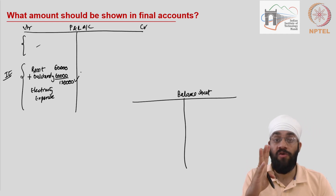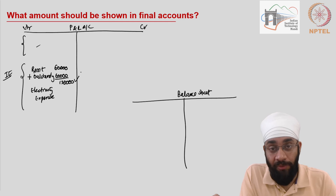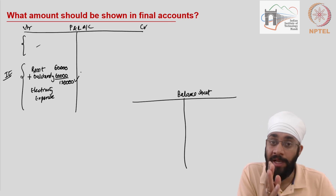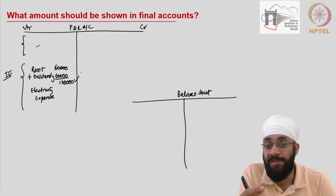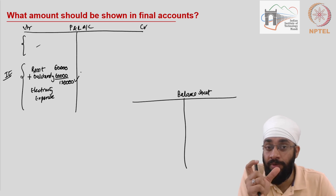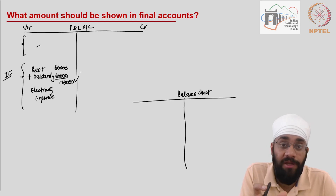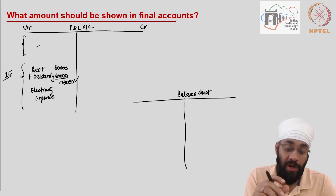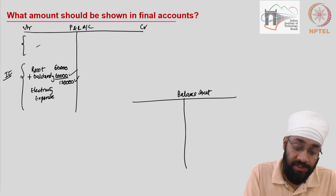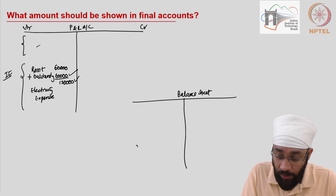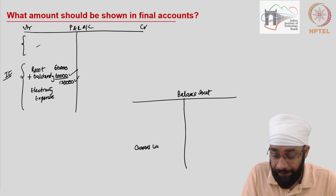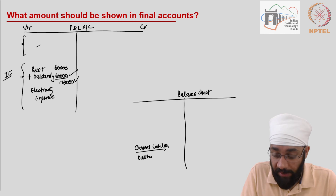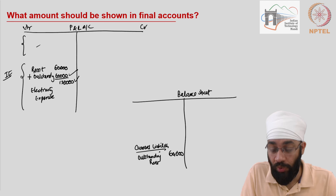The common perception of expenses is that we've paid for it and then we count it as an expense. However, in accounting language, an expense means whatever benefit you have taken in the given year — you call it an expense. If you've not paid it, it does not matter. Accounting is done on an accrual basis. So this 60,000 which is outstanding is going to go to current liabilities. We will say outstanding rent: 60,000 is going to be shown there.